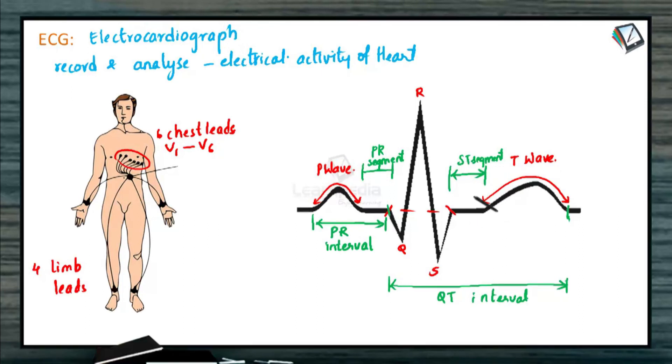In case this ST segment is elevated and appears like a wave, then it infers myocardial infarction. A tall T wave would infer hyperkalemia, that is high potassium in the blood. In case this T wave is inverted, then it infers hypokalemia or low potassium in the blood. So this is regarding the electrocardiograph.